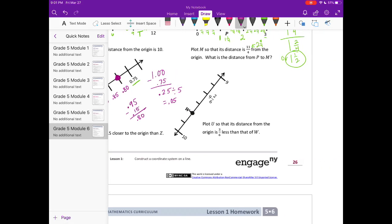Plot U so that the distance from the origin is 3 sixths less than that of W. So this one looks like it's broken up. It goes from 9 to 10. This is 9 and 2 sixths. So this is probably 9 and 1 sixth.